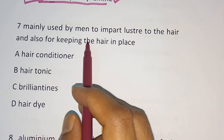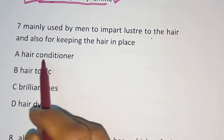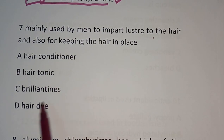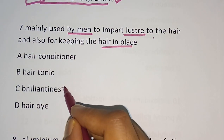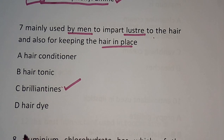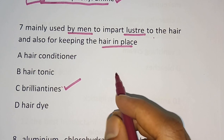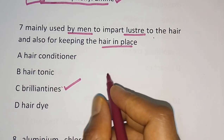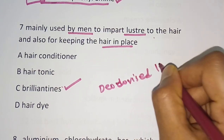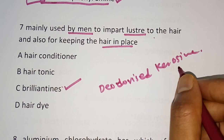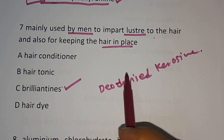Question number 7: Mainly used by men to impart lustre to the hair and also for keeping the hair in place — Hair conditioner, Hair tonic, Brilliantine, or Hair dye? The correct answer is Brilliantine. Brilliantine are of two types: solid brilliantine and liquid brilliantine. In case of liquid brilliantine, deodorized kerosene is used as mineral oil, or isopropyl myristate is used.